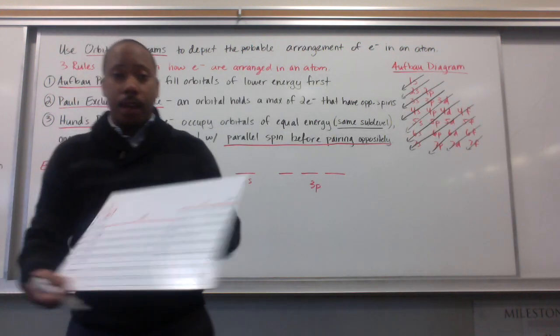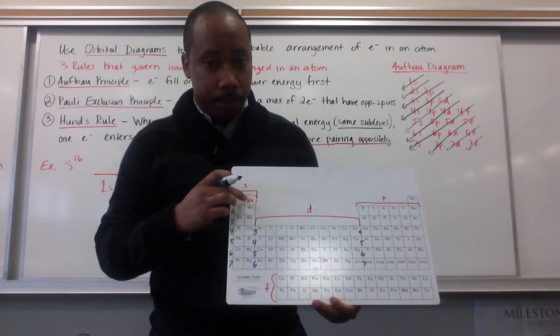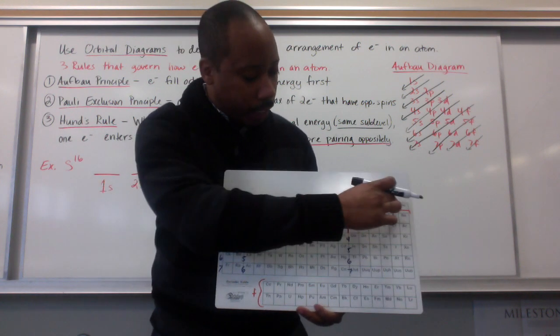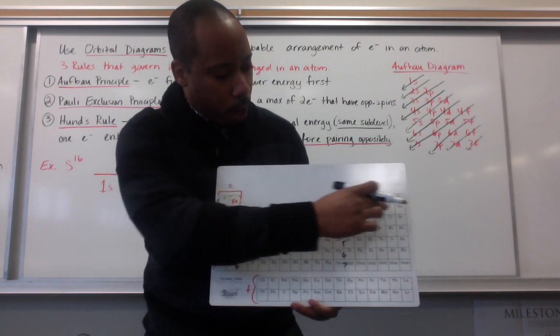Now, to get there, I start at 1s. To start at 1s, I go from hydrogen and helium. I read like a book from left to right. Hydrogen to helium, and then lithium to beryllium, and then across boron through neon.